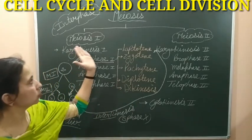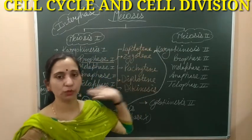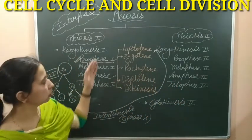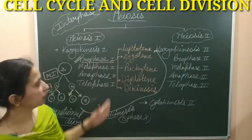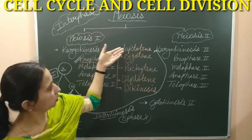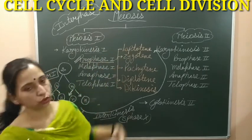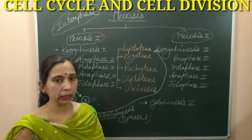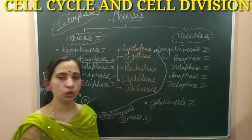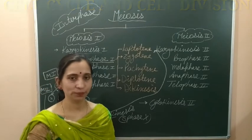So this is the complete flowchart and all the phases and sub-phases of meiosis. We can say that meiosis completes into two stages: meiosis 1 and meiosis 2. Now we will discuss all these phases in detail — we will start from the prophase 1 and discuss all the sub-phases of prophase 1 in detail in our next video. So keep watching, keep studying, and keep learning. Thank you.